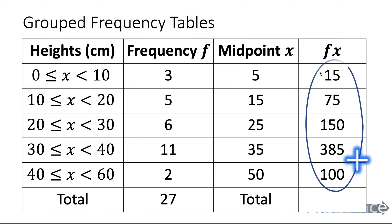And we add up all the fx. 15 plus 75 plus 150 plus 385 plus 100 is 725. Again just use your calculator for these.